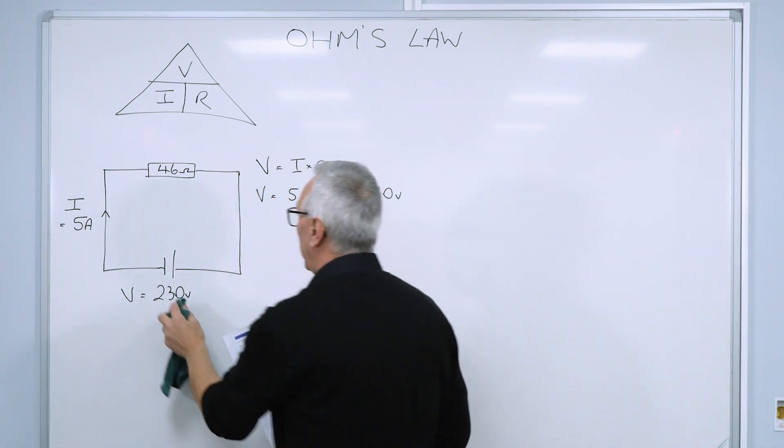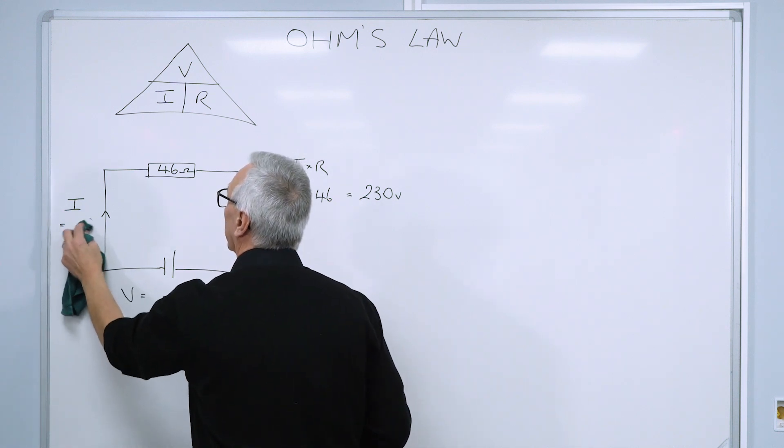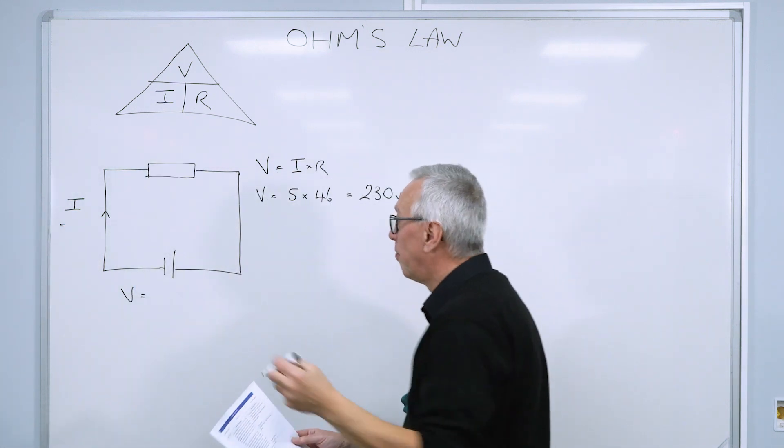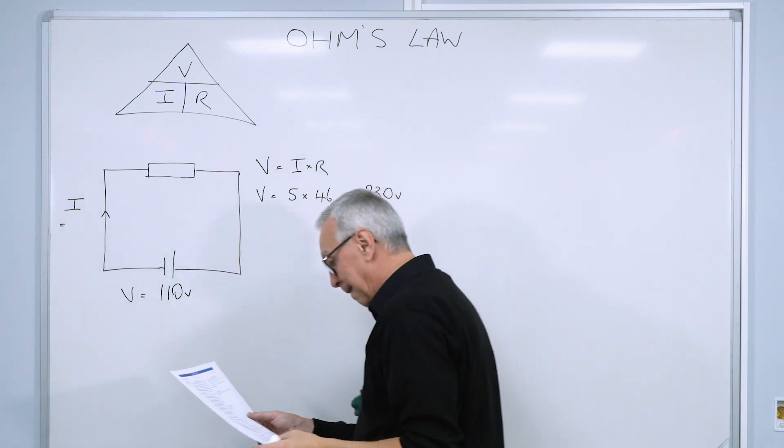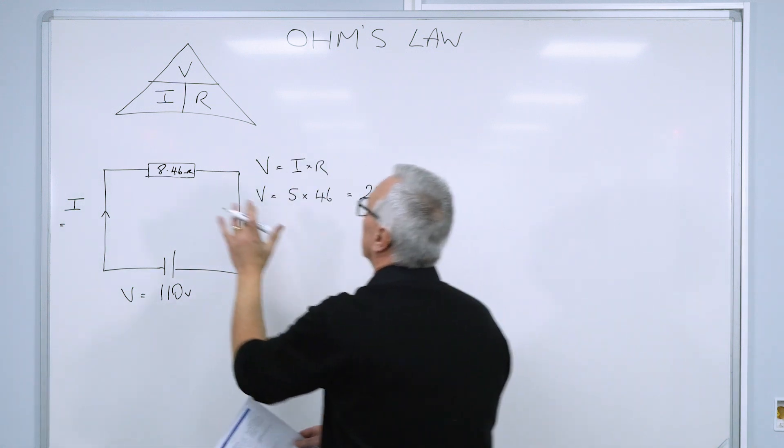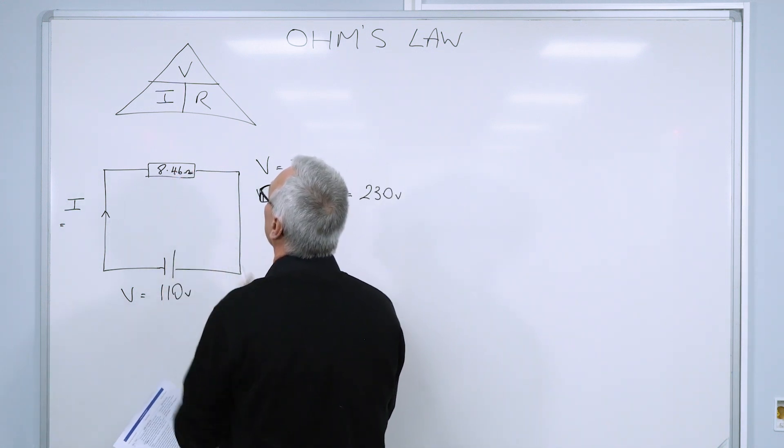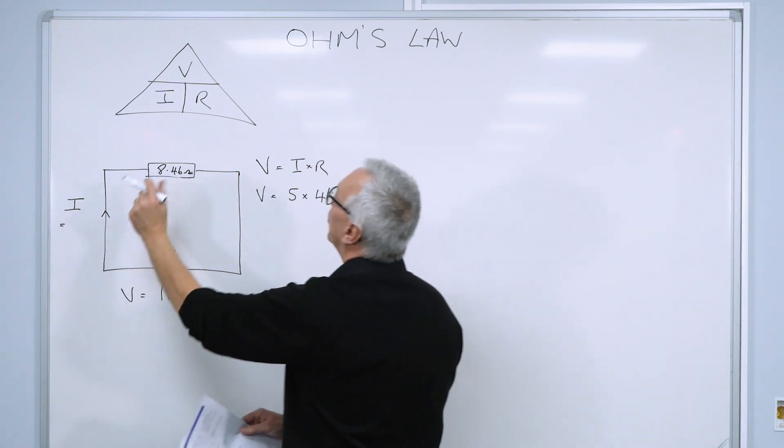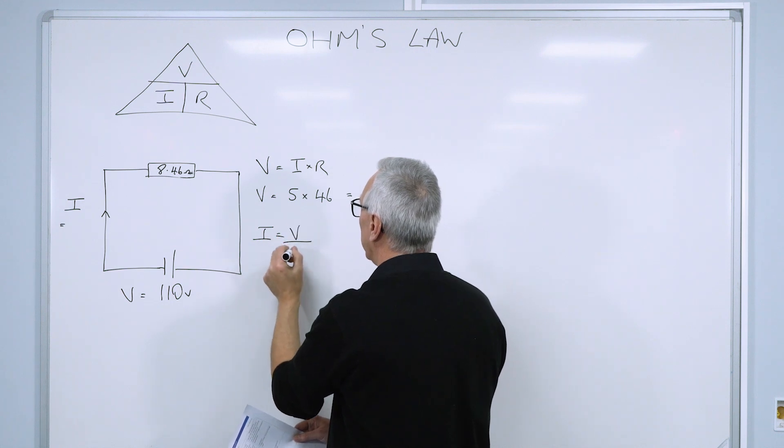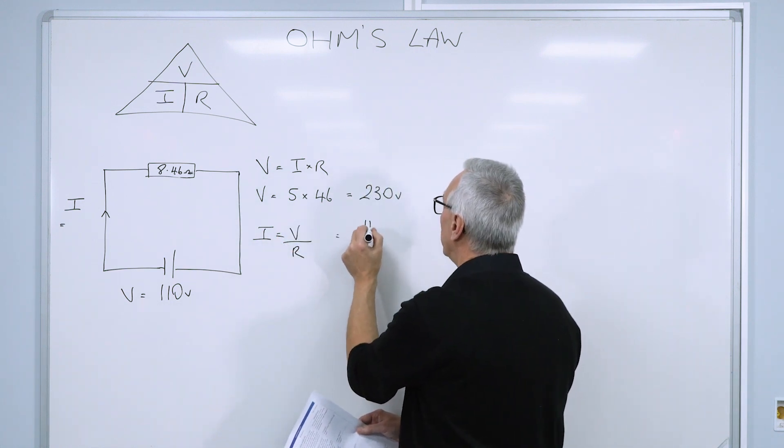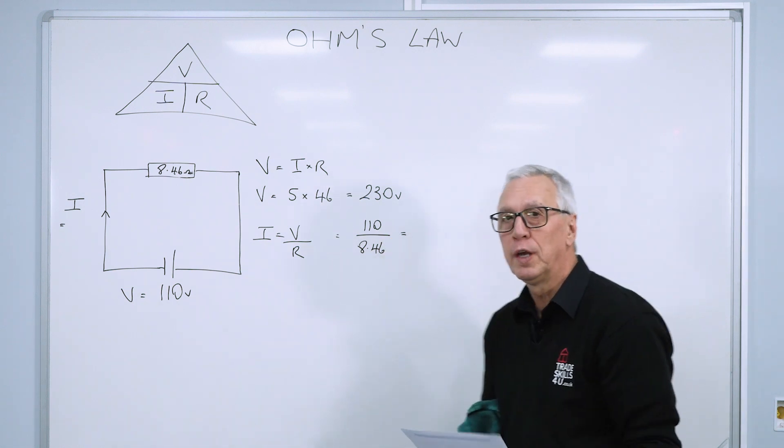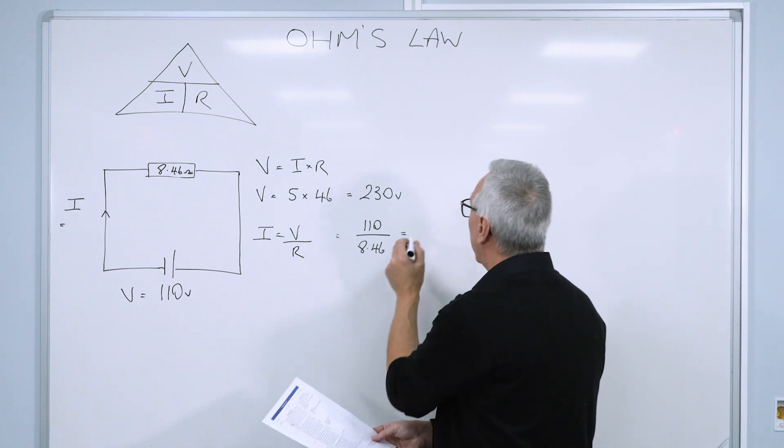I'm just going to change it around a bit now. Let's rub all that out, and we'll just do one where we're working out the current now. So let's say that we've got a voltage of 110 volts. We've got a resistance of 8.46 Ohms. Make that a bit clearer. There we go. And we want to work out the current. So we cover up I. Current is voltage divided by resistance. I equals V divided by R. Let's just put the figures in then. 110 divided by 8.46 equals, on your calculator, I hope you're doing this with me, 13 amps.